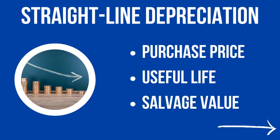For example, going back to the vehicle that the company purchased for $35,000, which will be in the business for five years — the salvage value is likely not going to be zero. So you need an estimated value at the date of disposal, at the date the asset will no longer be in the business. So those are the three bits of information you need: the purchase price, the useful life in years, and the salvage value.